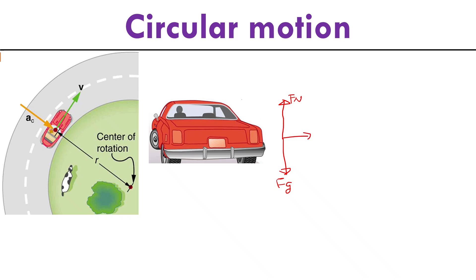Let's say the car has a friction force going to the right. If you look at this free body diagram, there is no centripetal force. So centripetal force should never show up on a free body diagram.